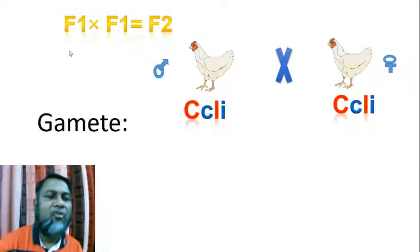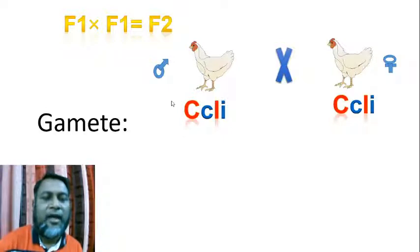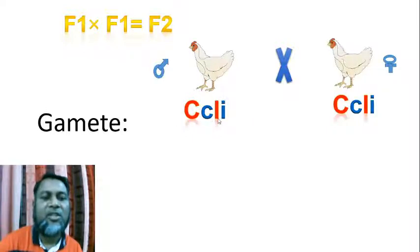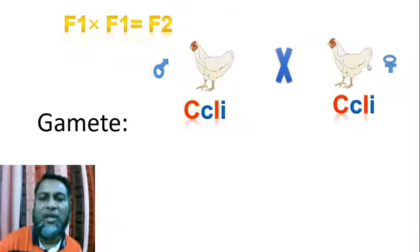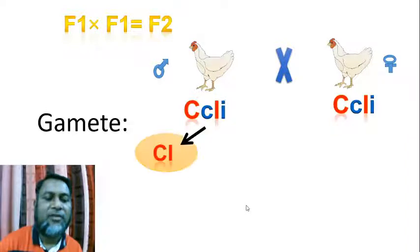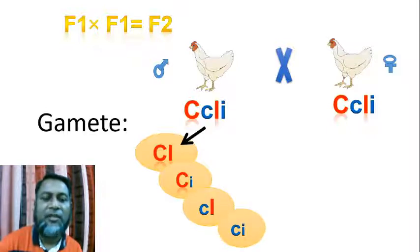When we cross F1 with F1, we get F2. Here both fowls have genotype Cc Ii. This male fowl creates four types of gametes, and the female also creates four types of gametes. These four types of gametes are: capital C capital I, capital C small i, small c capital I, and small c small i.